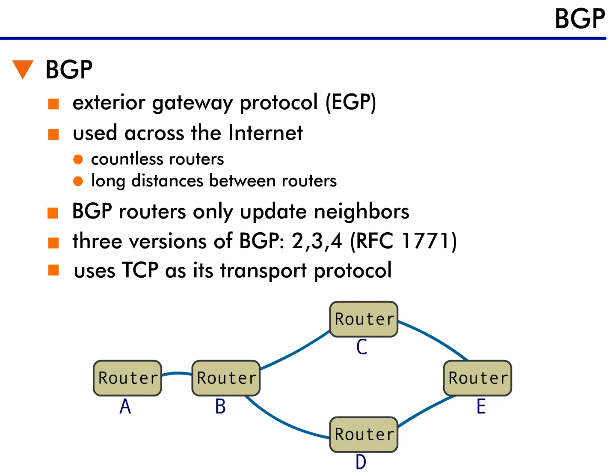Think about it this way. Imagine a network with five routers: A, B, C, D, and E. In this network, B can get traffic to E via either router C or router D. So, if either C or D was to fail, both B and E would need to know. However, if C fails, there's no reason for B to tell A, because A always communicates to C through B.